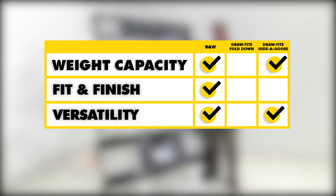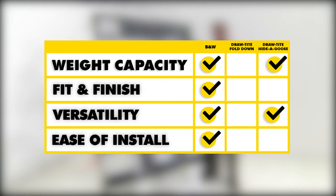Now when it comes to versatility, I think the Drawtite Hide-a-Goose and the B&W again are going to take this category simply because of the available options and accessories you can get for them. As far as ease of installation goes, I'm going to give it to the B&W here because after installing all three of these I felt that it was the easiest to install as well as accessing all our bolts and torquing everything down.